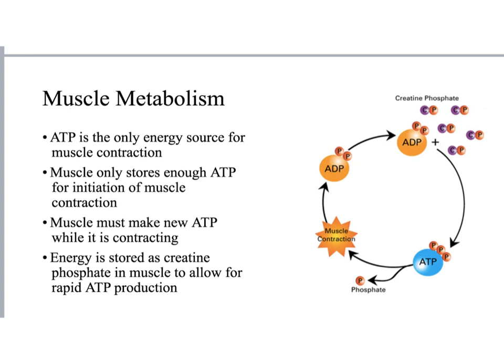So we looked at three ways the body can increase muscle tension: the relationship between length and tension; twitch and tension, including the different kinds of muscle - slow twitch, fast twitch, and intermediate; and motor units. Those are the three primary ways that the body increases muscle tension.